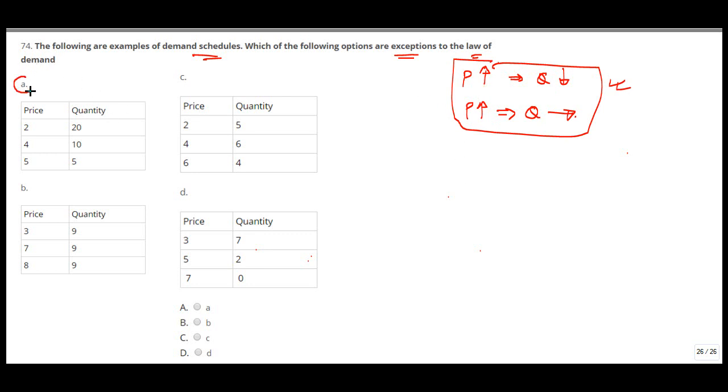If you see the first case A, price is increasing 2, 4, 5, and quantity is decreasing. So this is okay.